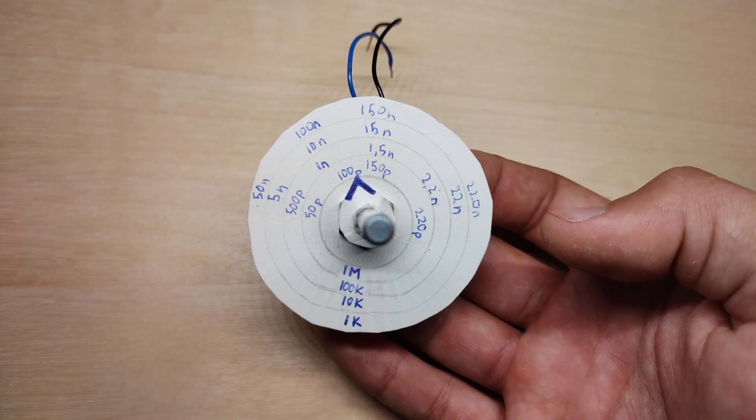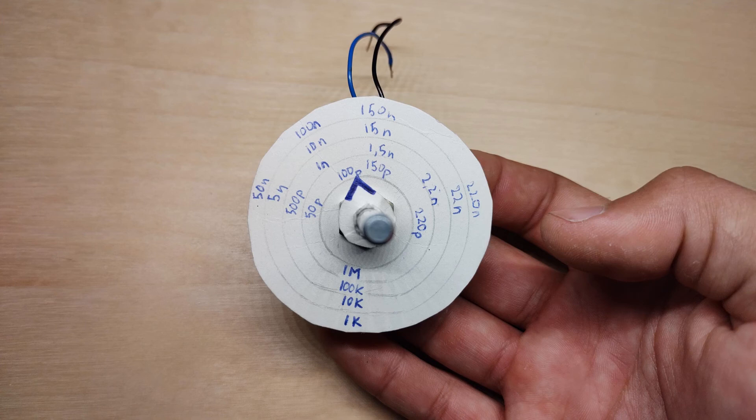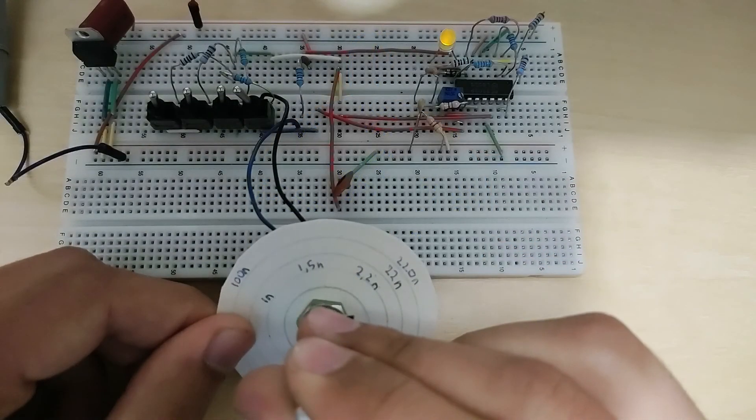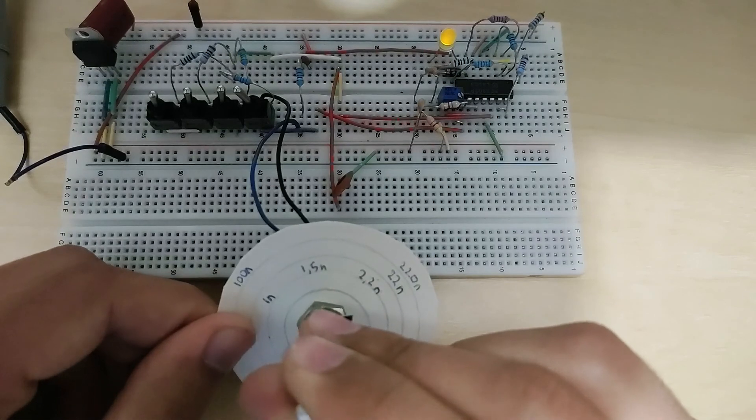Okay, so looking at the final result here we can see that all the powers of 10 of the different values like 2.2, 22, 220 are all pretty much in line here, and that is a pretty good thing because it means the system works pretty well.